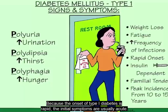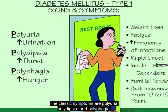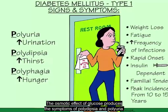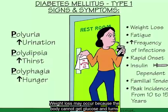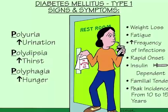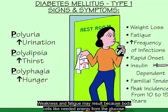Because the onset of type 1 diabetes is rapid, the initial symptoms are usually acute. The classic symptoms are polyuria, polydipsia, and polyphagia. The osmotic effect of glucose produces the symptoms of polydipsia and polyuria. Polyphagia is a consequence of cellular malnourishment when insulin deficiency prevents utilization of glucose for energy. Weight loss may occur because the body turns to other energy sources such as fat and protein, and weakness or fatigue may result because body cells lack needed energy.